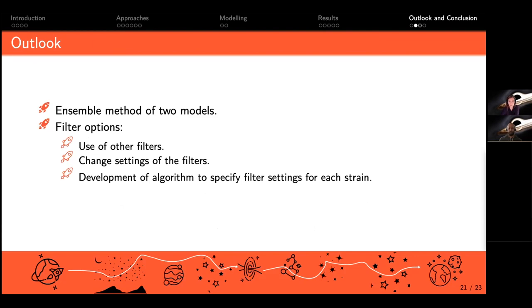Another thing we could do—and we think this is a determining factor—is the filter options. Since we had good results with 10% of the data but not so good with 100%, we think by using maybe some other filters or changing the settings of the filters we could reach better results. Another thing would be to develop an algorithm to specify the filter settings for each strain, but this is really a bigger scientific project.